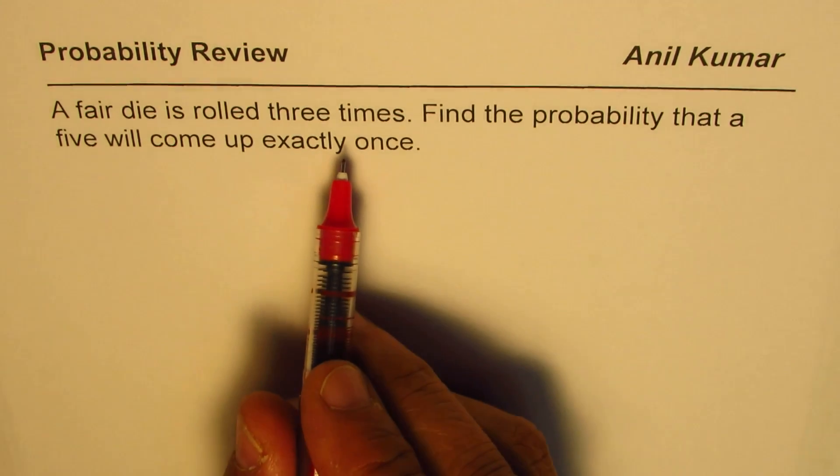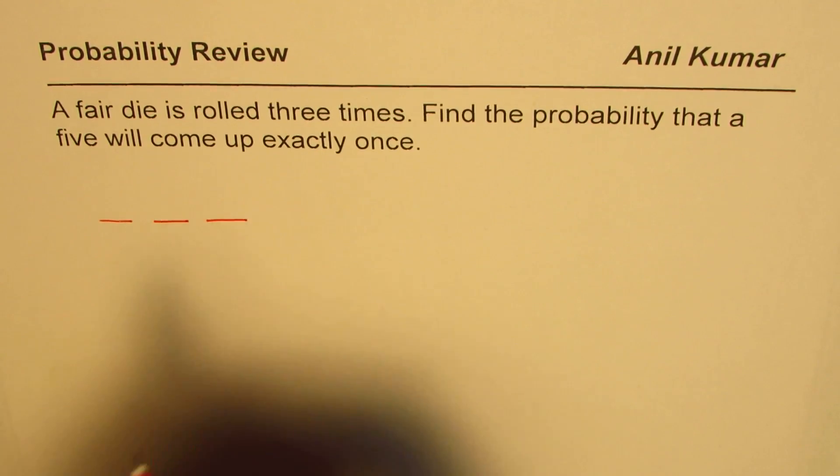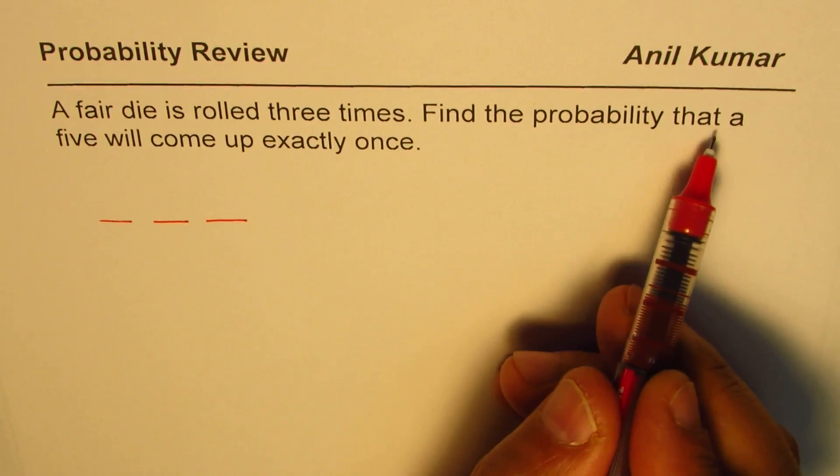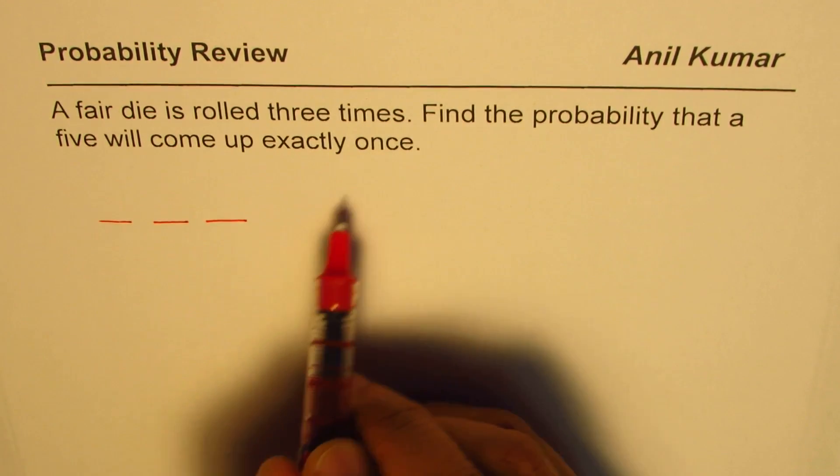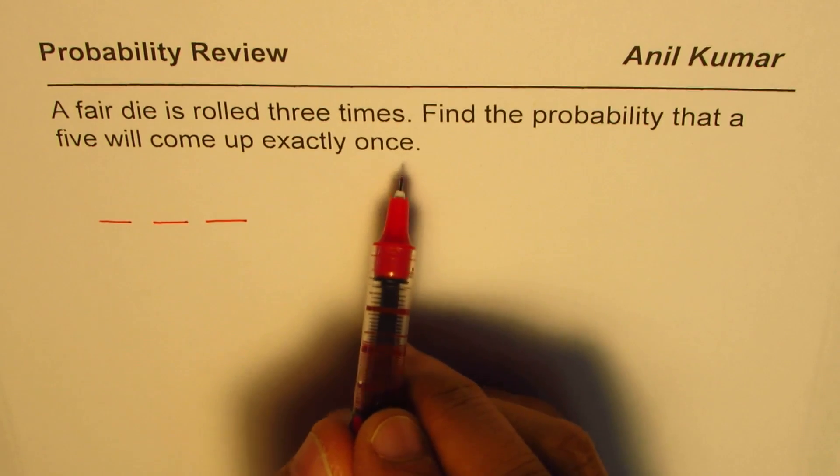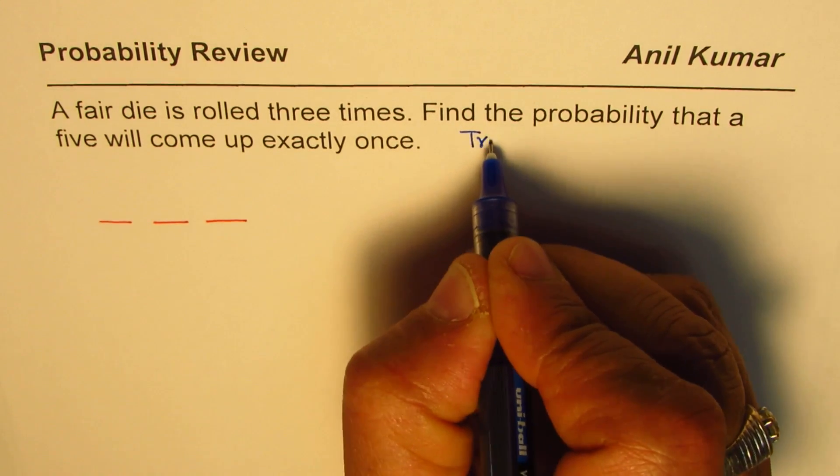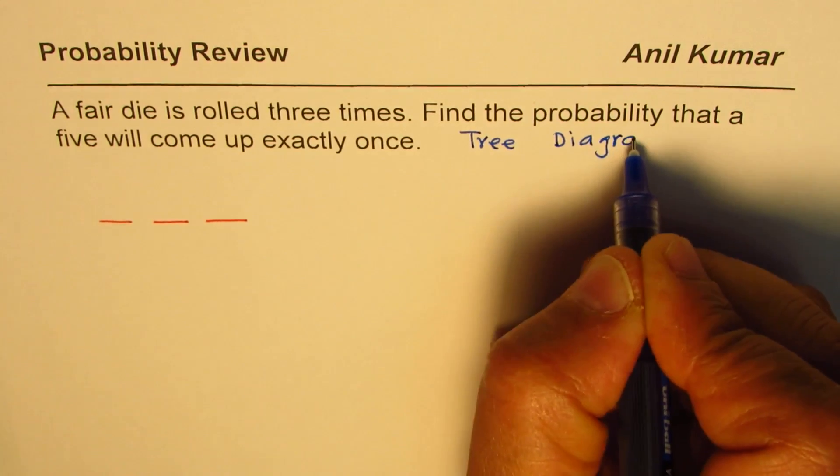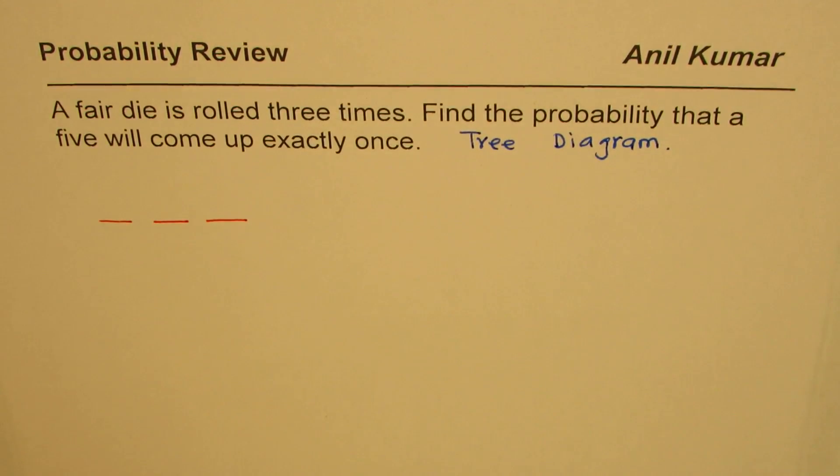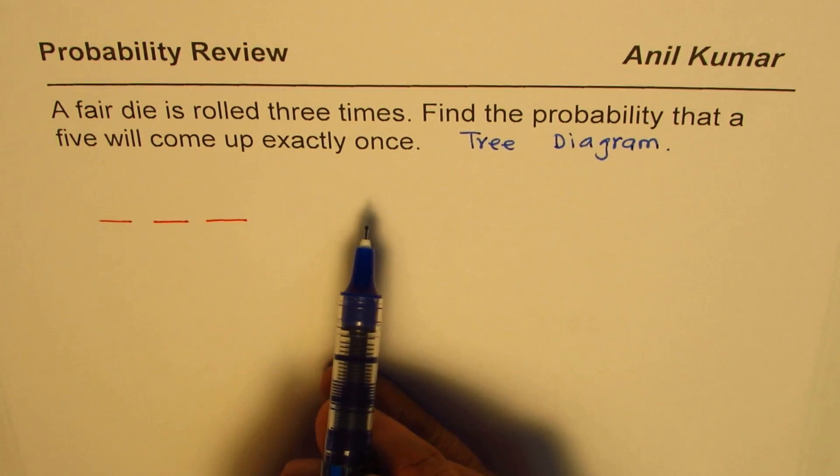Well, what we are trying to say is that three times the die is rolled, find the probability that five will come up exactly once. You can do this example with tree diagram also, so some of you can actually draw a tree diagram and answer the question. I'm adopting counting principles to find the solution of this particular question.